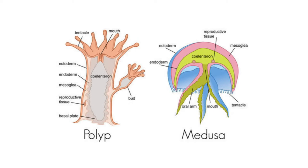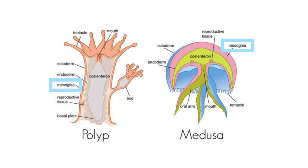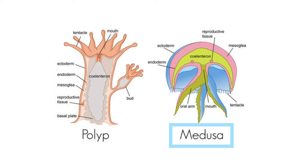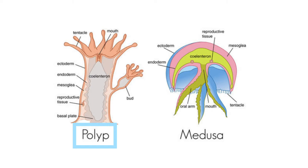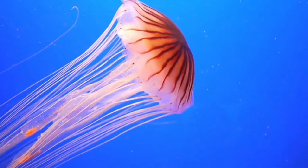Their bodies consist of mesoglia, a non-living jelly-like substance, sandwiched between two layers of epithelium, a type of animal tissue, that are mostly one cell thick. They mostly have two basic body forms: swimming medusae and sessile, or without the capacity for self-locomotion, polyps, both of which are radially symmetrical, with mouths surrounded by tentacles that bear cnidocytes.